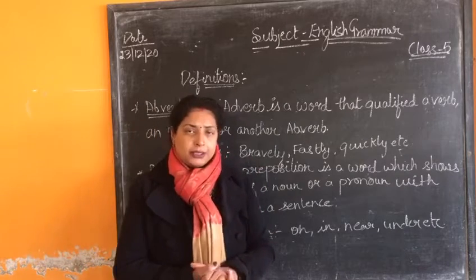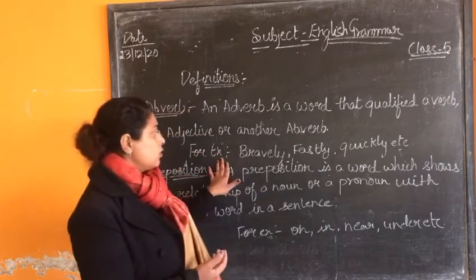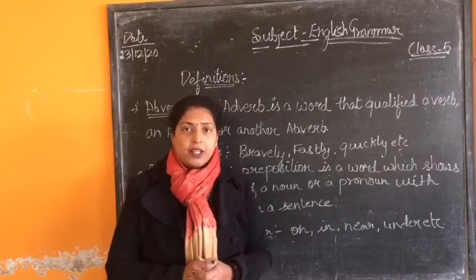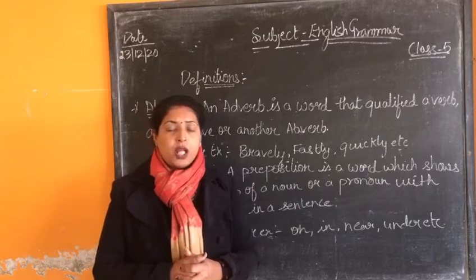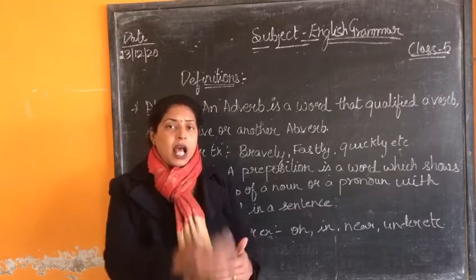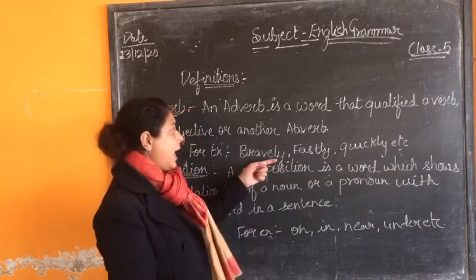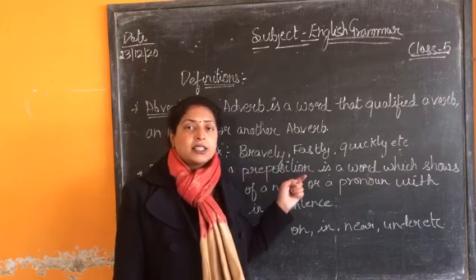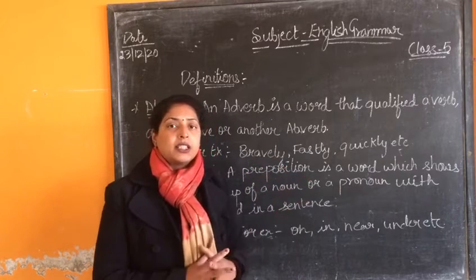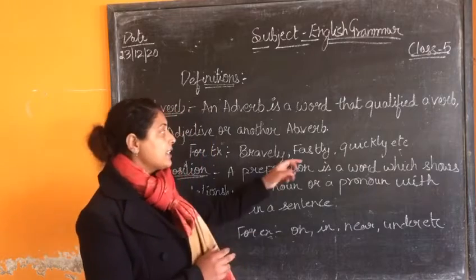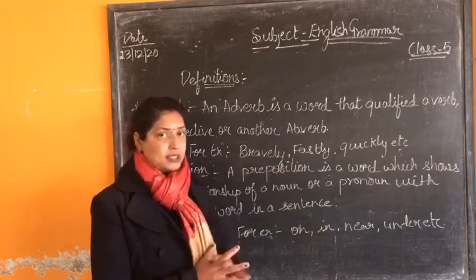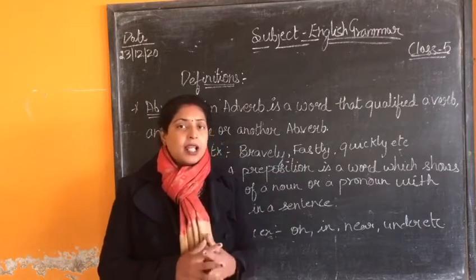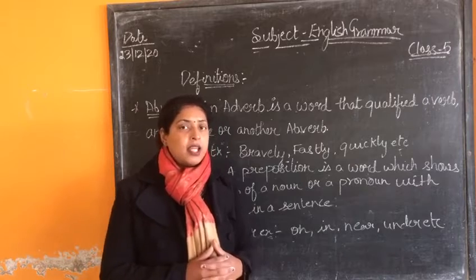For example, brave is an adjective. When I add LY, it becomes bravely. So it becomes an adverb — very fastly. Fastly means my adjective has become an adverb.